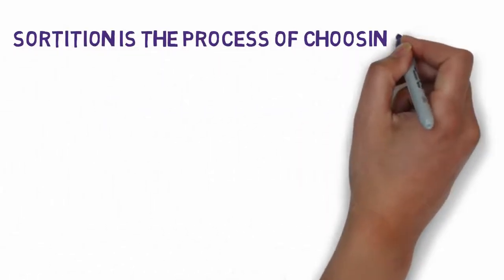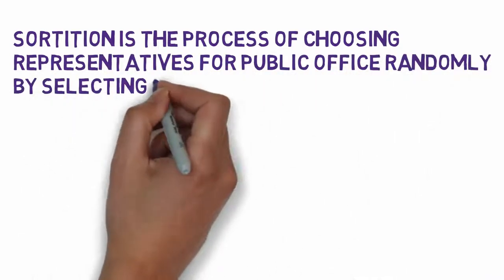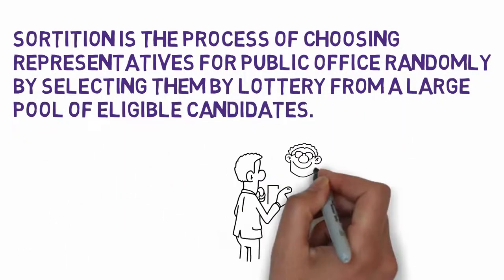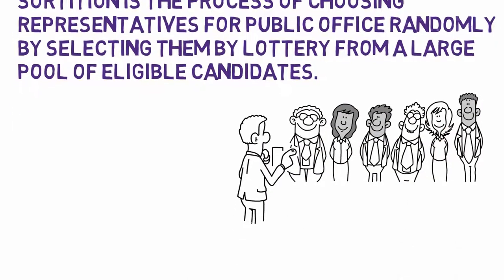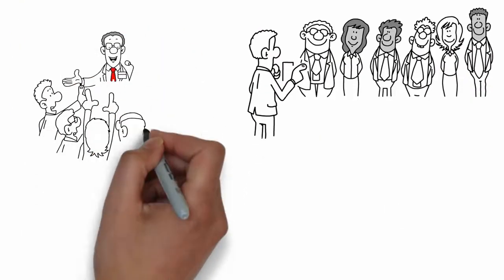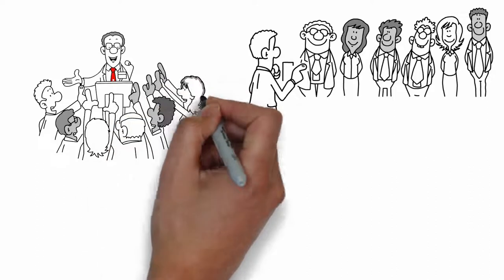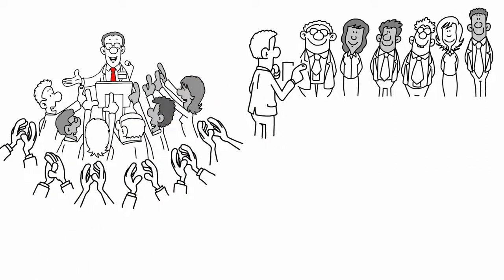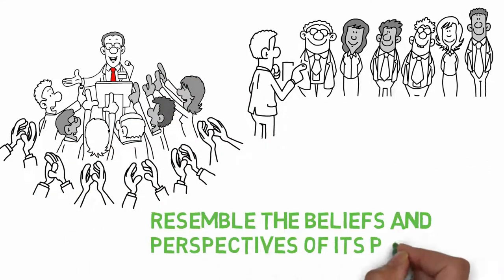Sortition is the process of choosing representatives for political office randomly by selecting them by lottery from a large pool of eligible candidates. The primary purpose of sortition is to better ensure that a society's official representatives more closely resemble the beliefs and perspectives of its population.